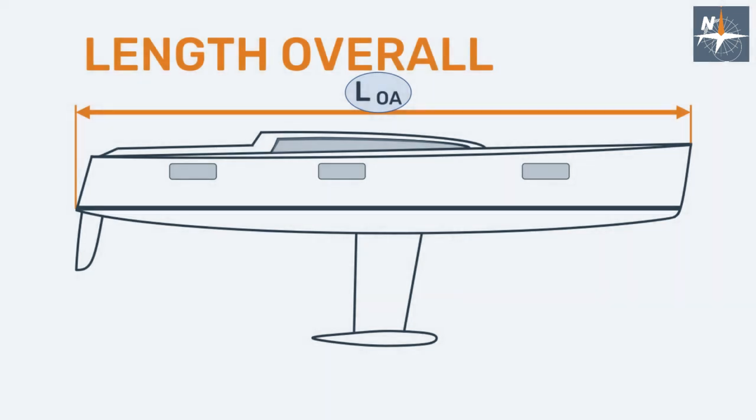The length overall is the maximum length from the stem to the extreme aft end of the hull. Spars or fittings like, for example, bowsprits and pulpits or the rudder itself are not considered.